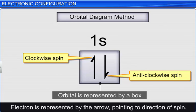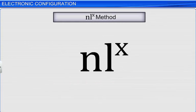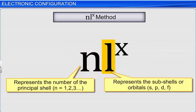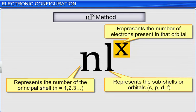The other way of representing the electronic configuration is by the NLX method. Here, N represents the number of the principal shell — that is, one, two, three, etc. L represents any subshell or orbital: s, p, d, f. And X represents the number of electrons present in that orbital. For example, 3p2 denotes that the p subshell of the third principal orbit contains two electrons.